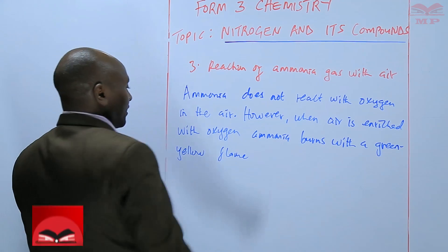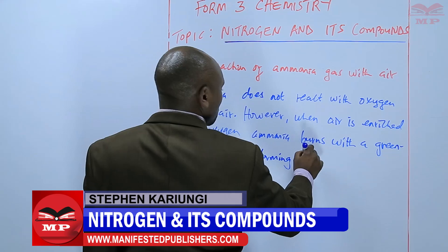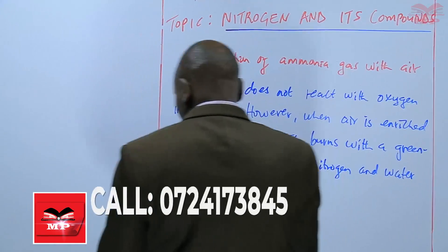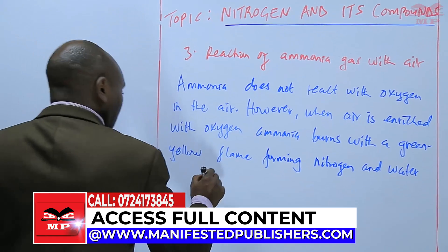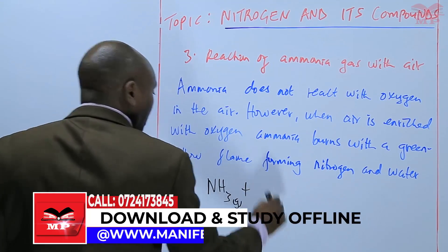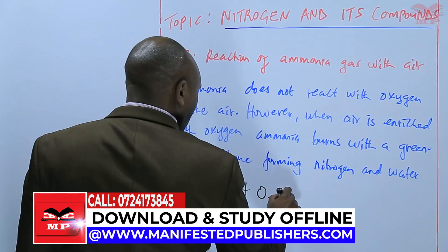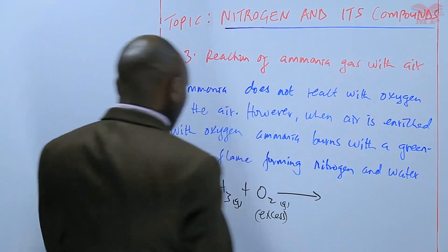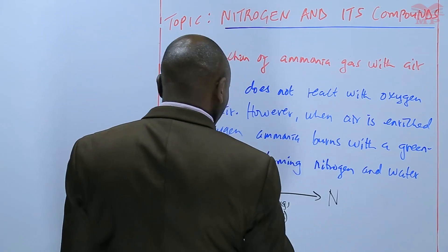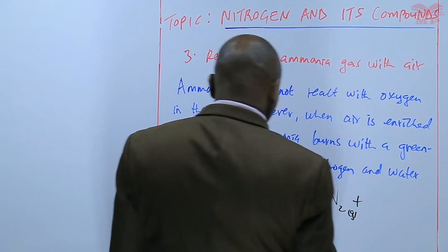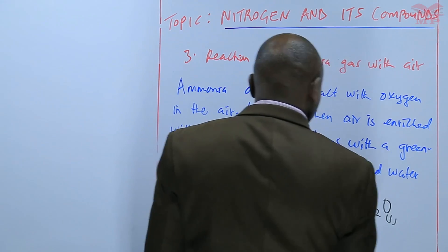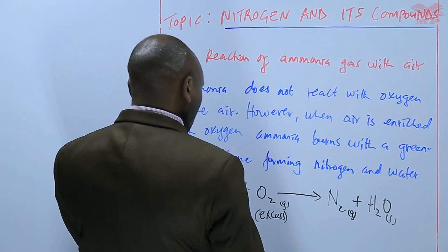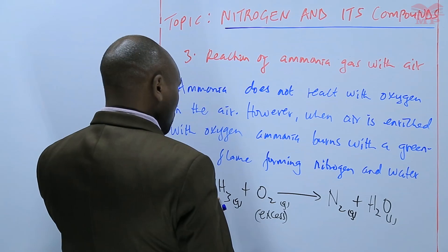This leads to the formation of nitrogen and water. So if ammonia gas reacts with air that is enriched with excess oxygen, it will be oxidized to nitrogen gas and water. We can now balance the equation — the nitrogen is balanced, and we balance the hydrogen which will be six, so we put three.